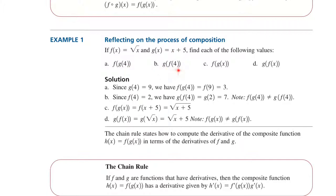For G of F of 4: F of 4 is the square root of 4, which is 2, and G of 2 is 7. For F at G of x, in function F we replace x by G of x, which is x plus 5, and we have the square root of x plus 5.